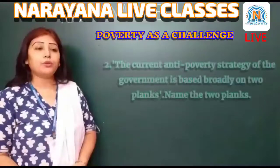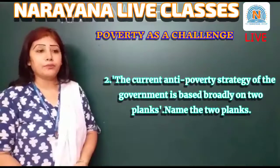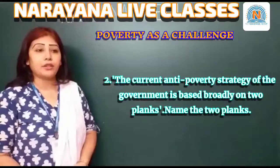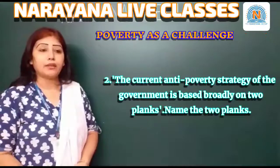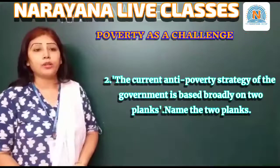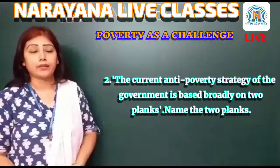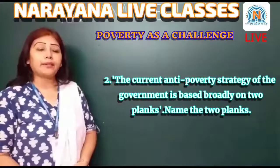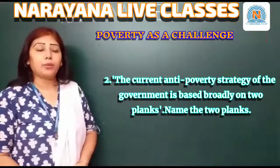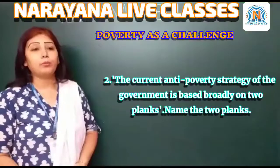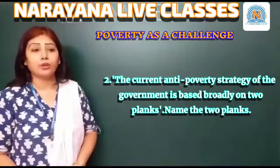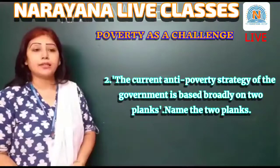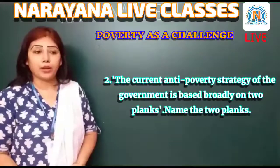Moving on to question number two: The current anti-poverty strategy of the government is based broadly on two planks — name the two planks. The two planks are: number one, promotion of economic growth, and number two, targeted anti-poverty programs.